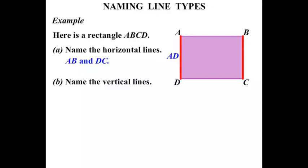This line here is also vertical going straight up and down. BC. So the two lines AD and BC.